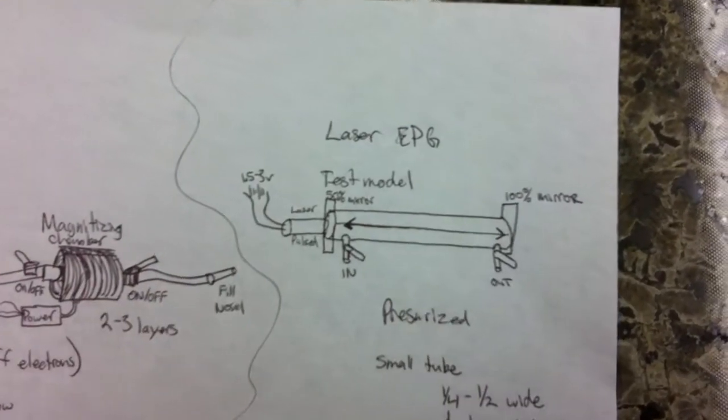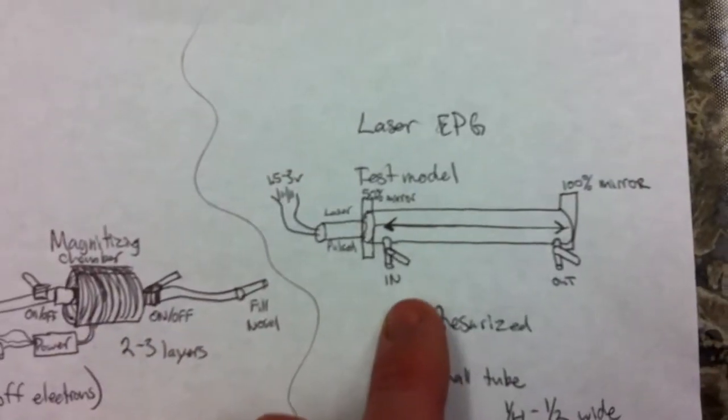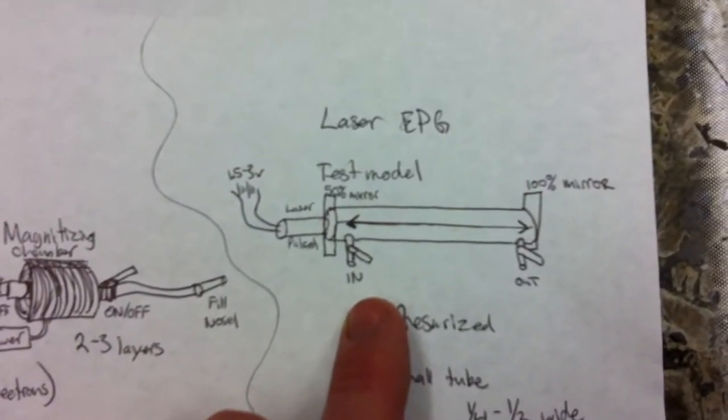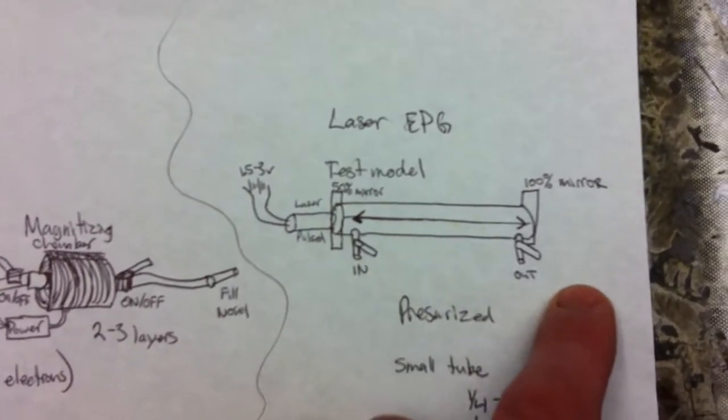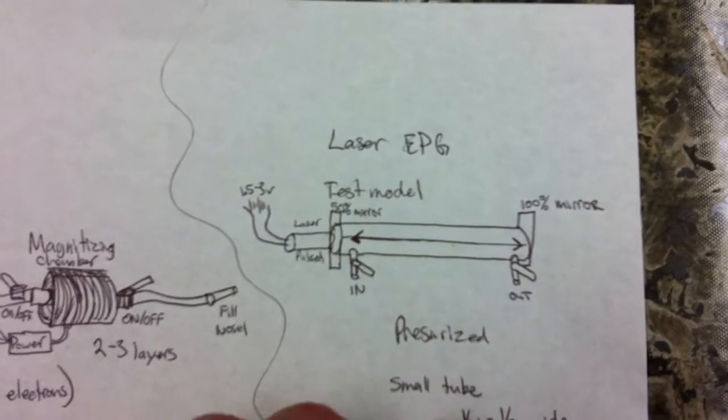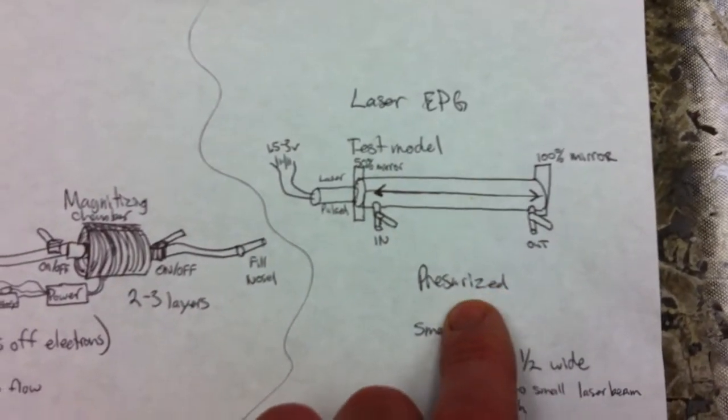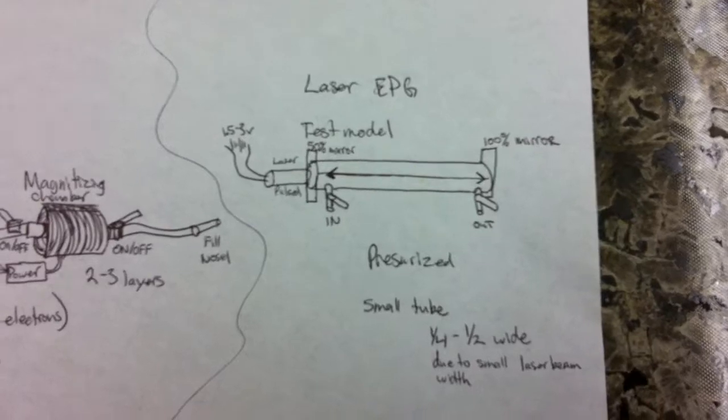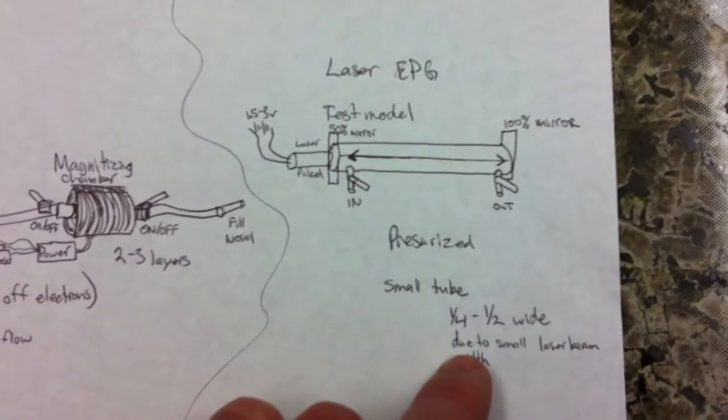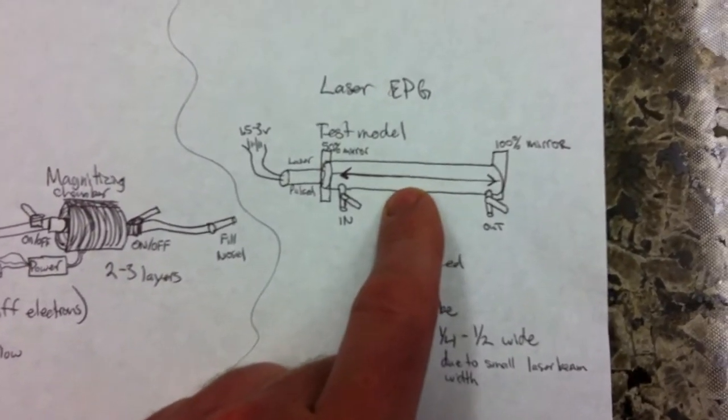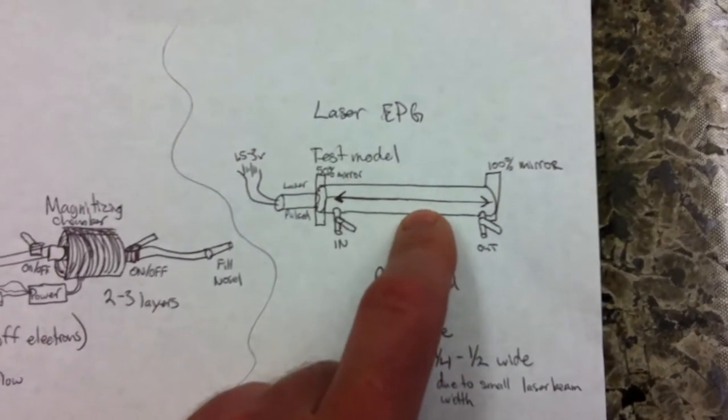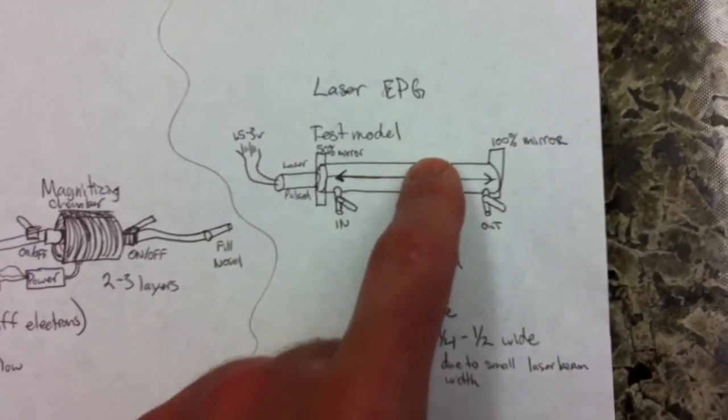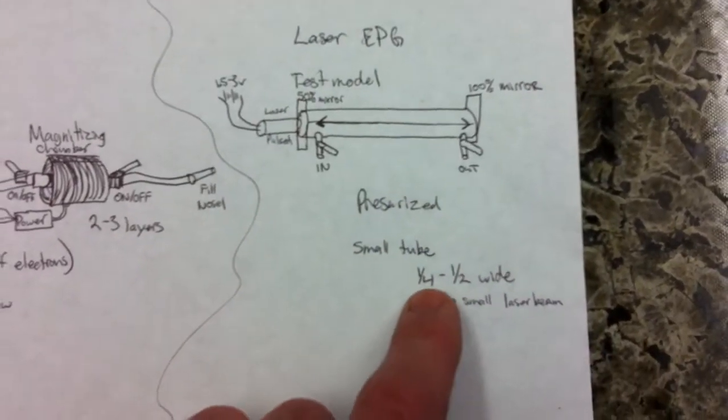So this is it. This is going to be my test model. It's going to be a linear piece of pipe. 50% mirror on the laser side. 100% mirror on the other. And that laser just bounces back and forth. I'm going to pressurize it with the gas. I don't know the PSI yet. But I want to use a small tube here because that laser beam is so fine. I don't want my EMF field to have to travel very far. So I'm thinking a quarter inch or a half inch wide for that reason.